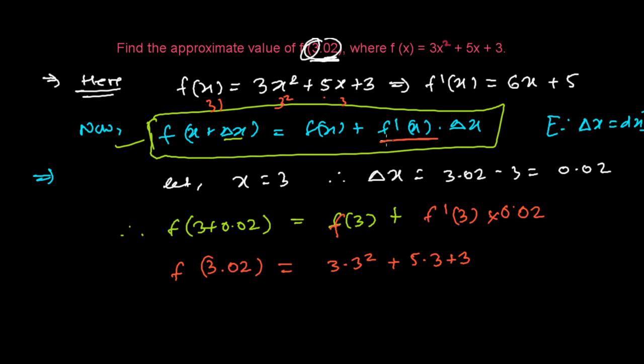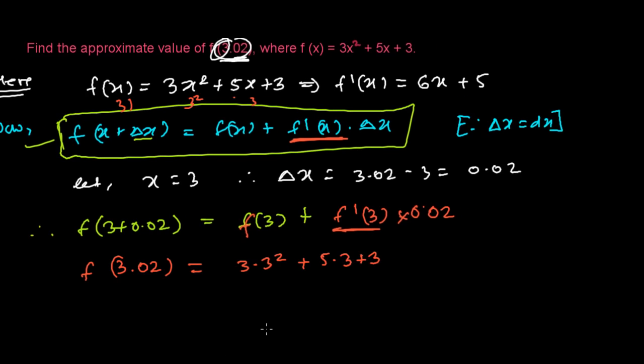Now I deal with the f'(3) part. f'(x) is 6x + 5, so f'(3) will be plus 6 times 3 plus 5, and then times this 0.02.